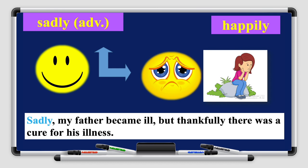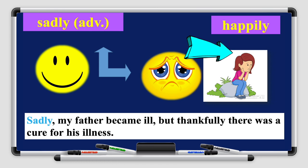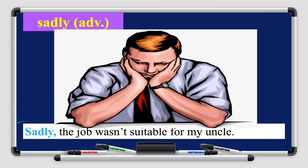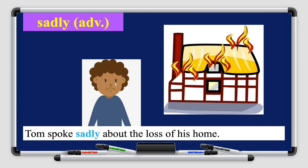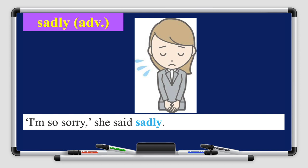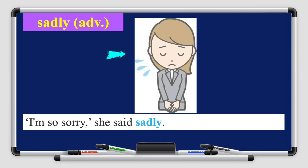The next word is 'sadly' — it's an adverb. Happily and sadly are antonyms, they are opposites. Let's read the sentences: sadly my father became ill but thankfully there was a cure for his illness — the girl was sad because her father was ill but thankfully he will be treated. Sadly the job wasn't suitable for my uncle — he applied for a job but it wasn't suitable so he was sad. Tom spoke sadly about the loss of his home — Tom lost his home in a fire. Another sentence: 'I am so sorry,' she said sadly — the girl is apologizing sadly.